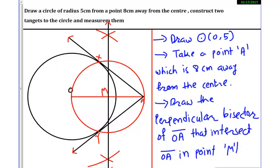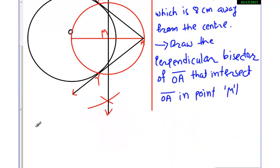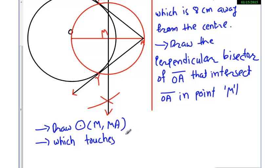Now draw another circle with center M and radius MA. This circle touches the center O radius 5cm circle at points X and Y.